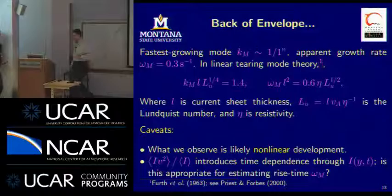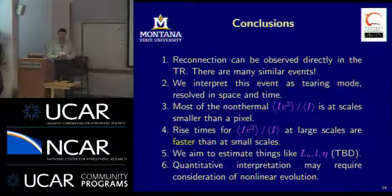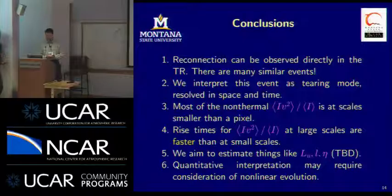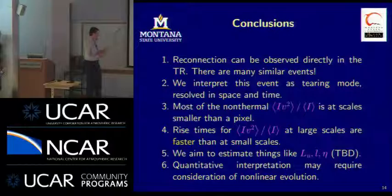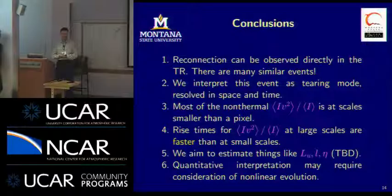The speaker acknowledges uncertainty in the analysis: the intensity weighting introduces time-dependent artifacts since the intensity pattern is moving, which may compromise the steep rise times observed. Further analysis is needed to determine the best approach to the velocity field. Conclusions are: we see reconnection directly in the transition region; this event appears to be a tearing mode resolved in space and time; most non-thermal velocity squared is at sub-pixel scales, yet that quantity rises much faster at large scales. Future goals include estimating the Lundqvist number, current sheet thickness, and resistivity from observations, requiring more than just linear tearing theory.